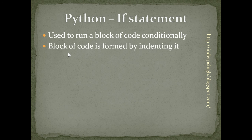We don't need braces to create a block of code. In Python, the block of code is formed by simply indenting it by a few spaces — a minimum of one space, but usually four spaces are used for better readability.